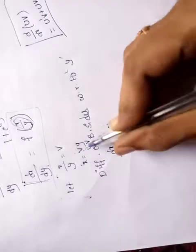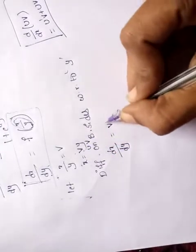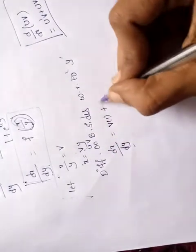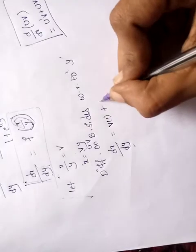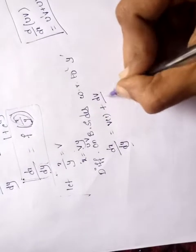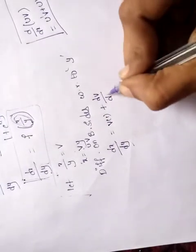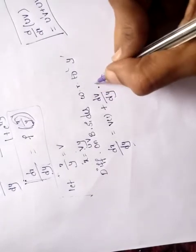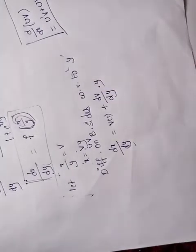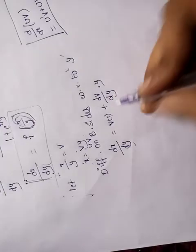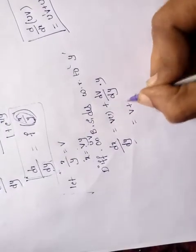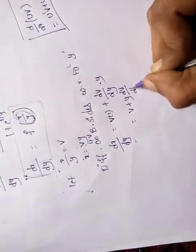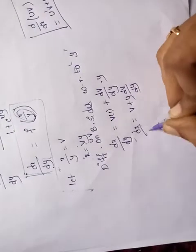Differentiating x = vy with respect to y: the derivative of v*y using uv rule is v*(dy/dy) + y*(dv/dy) = v + y*dv/dy. So dx/dy = v + y*dv/dy.